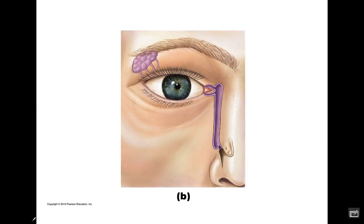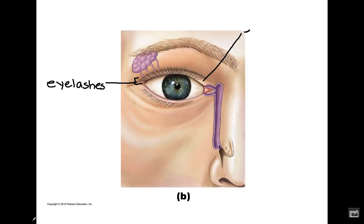What we have here is an external view of the eye. We want to look at a couple of features of the eye as well as some structures in and around it. The first items here are the eyelashes. The eyelashes are attached, both top and bottom, to the eyelid.